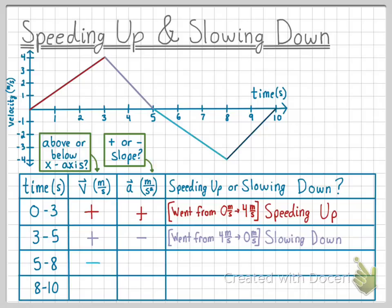Next, we will analyze the graph from 5 to 8 seconds. The graph is now below the x-axis, and all the y-values have negative velocities, so our velocity is now negative. The slope of the line is still negative, so the acceleration is also negative. The object started with a velocity of 0 meters per second, also known as rest, and increased to a speed of 4 meters per second in the negative direction — that's why we have a velocity of negative 4. Since we started at rest and reached a speed of 4 meters per second, we know that the object was speeding up.